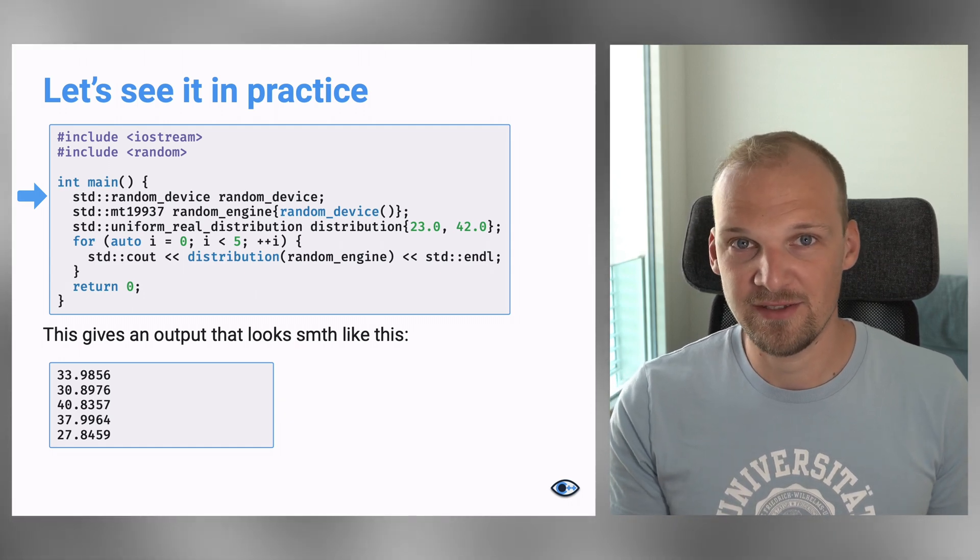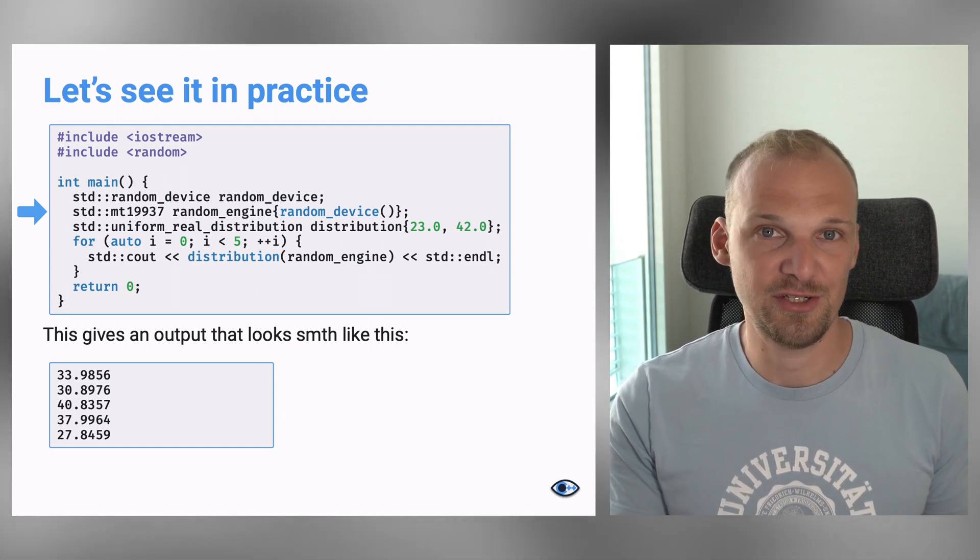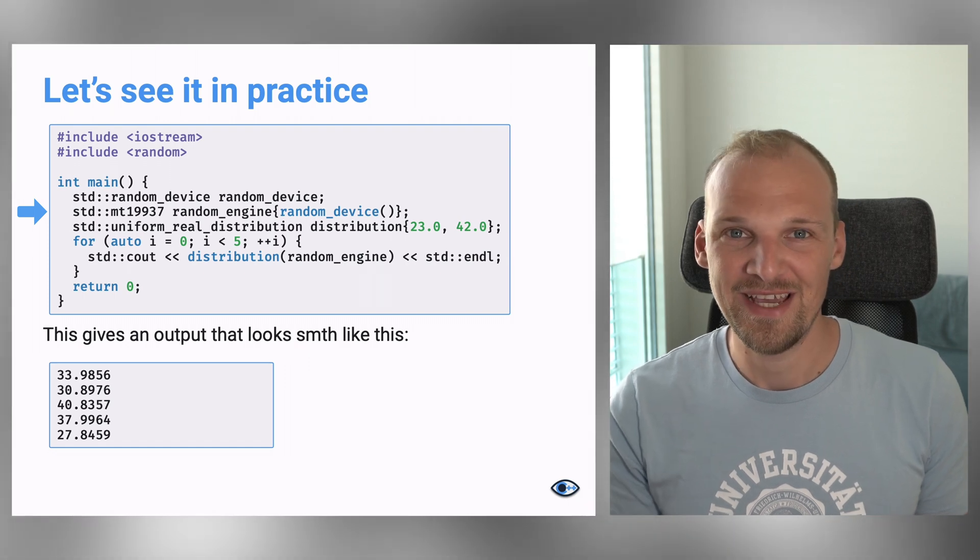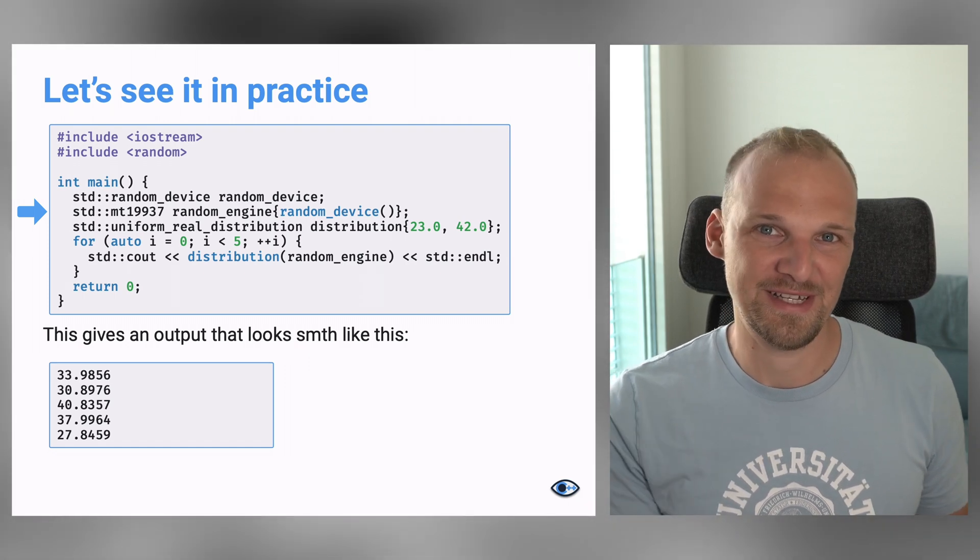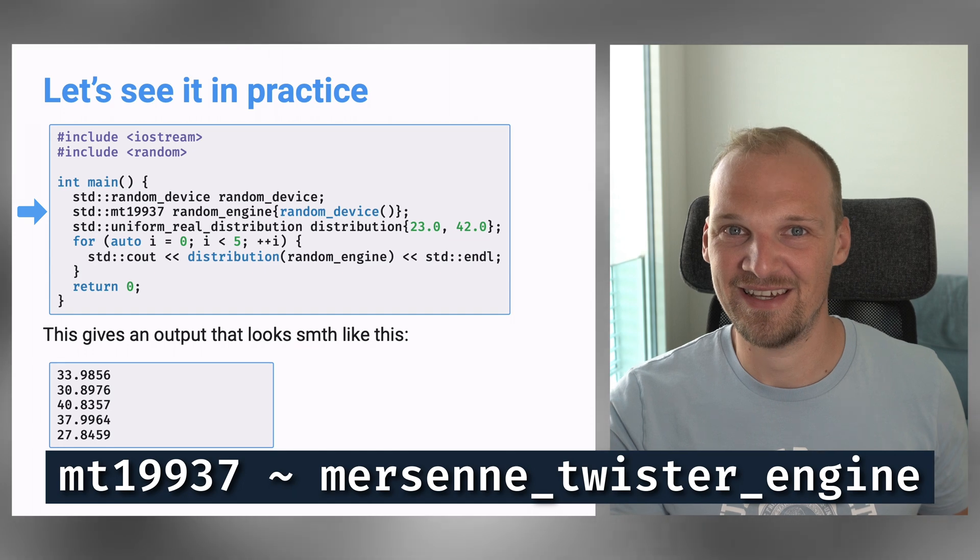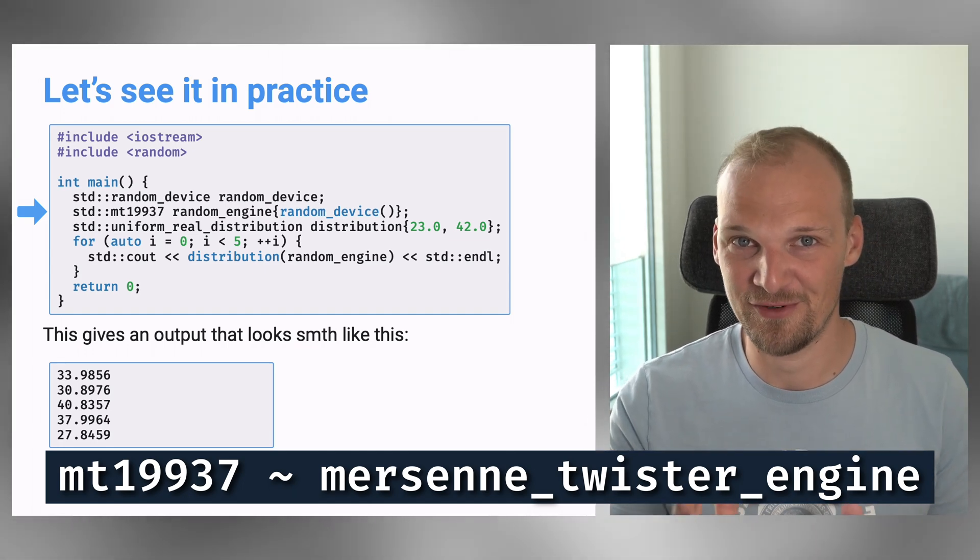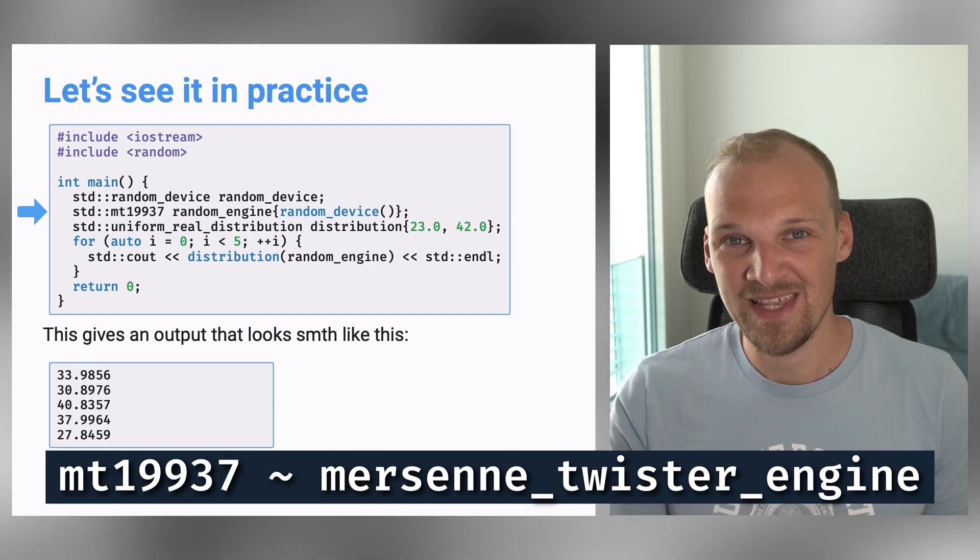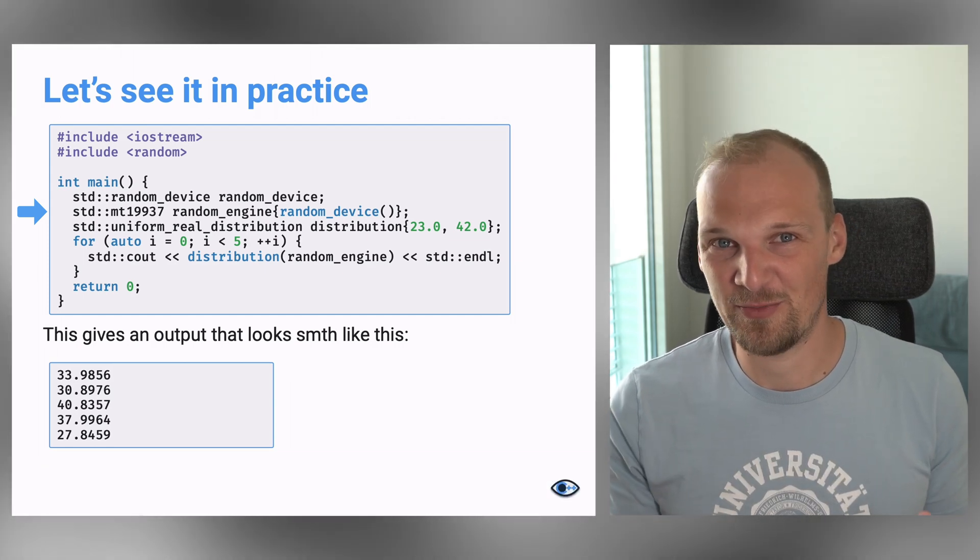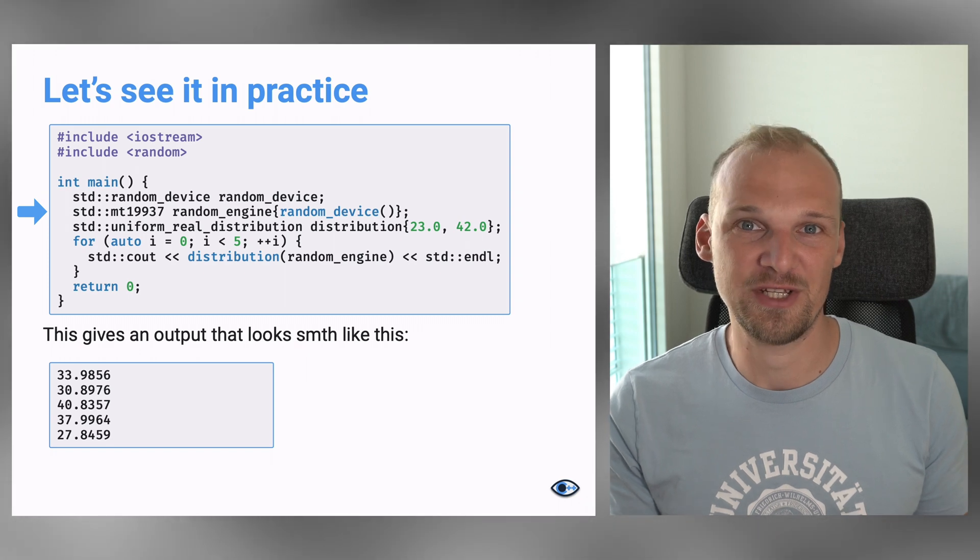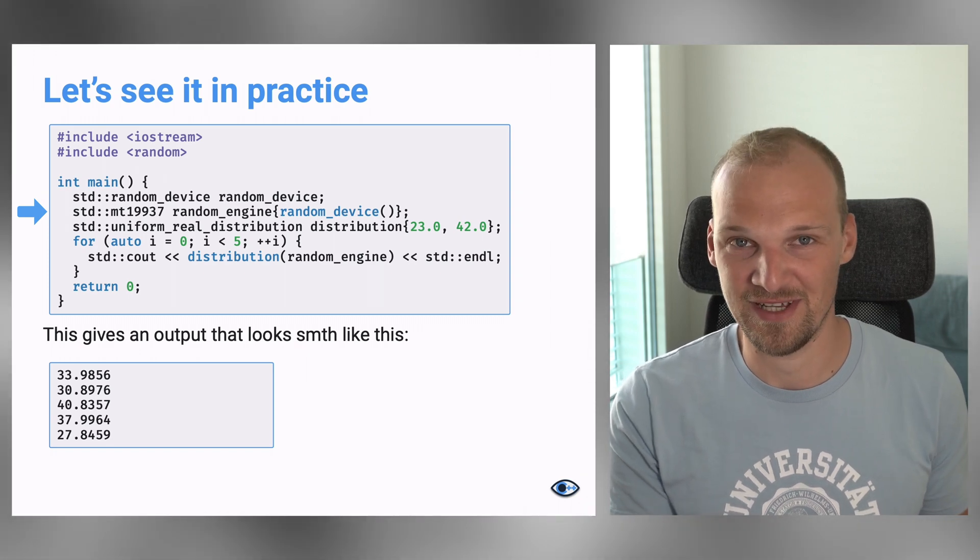And let's create one of the engines. And this engine has a very weird name, but it's basically one of those names defined in the random header. Feel free to go to cppreference.com and see for yourself what it is. And the numbers that are there are basically just representing the parameters with which that particular engine is initialized.